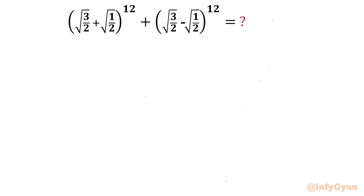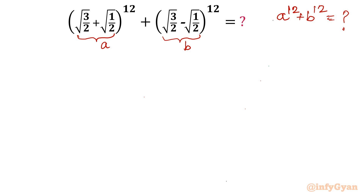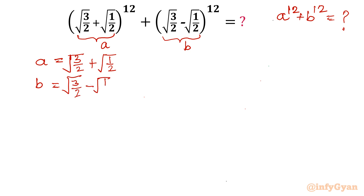Let's get started. I will consider the very first bracket as A and the second bracket as B. So ultimately what we are looking for is A^12 + B^12. Now let me write A and B both: A = √(3/2) + √(1/2), and B = √(3/2) - √(1/2).